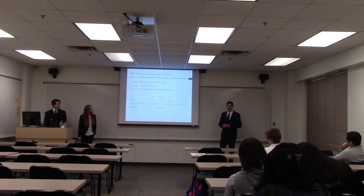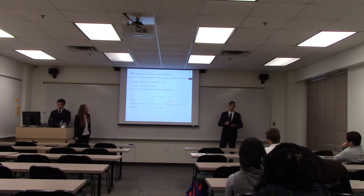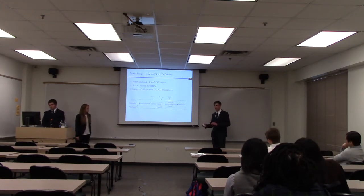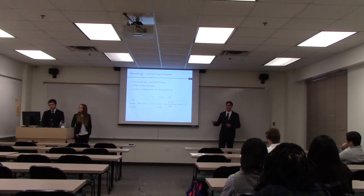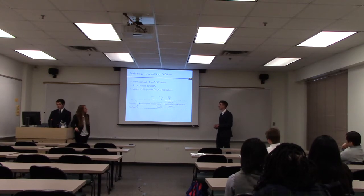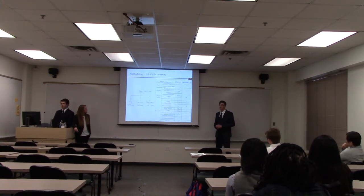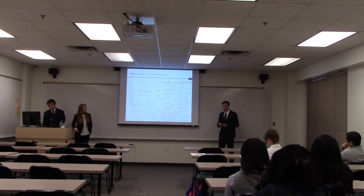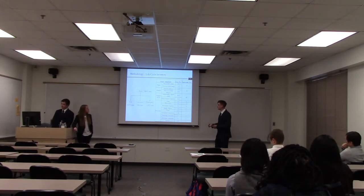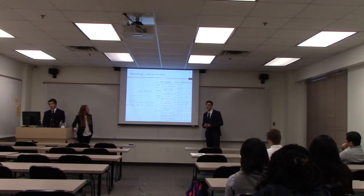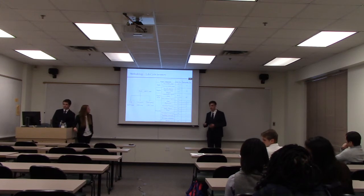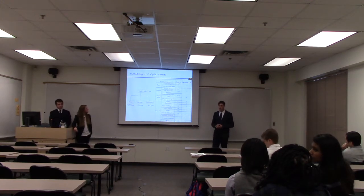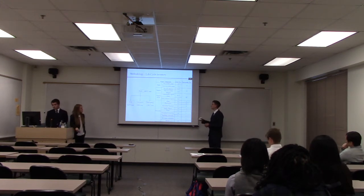Our goal in analyzing these variables is to determine whether single stream or multi-stream is more favorable. The scope starts at the beginning of waste collection and continues until the end of life of the waste. Harrisonburg is divided into two systems: JMU, which adopts a multi-stream recycling system characterized by three main components — paper, plastic, and organic waste — and the city itself, which uses a single stream recycling system, characterized by recyclable and non-recyclable components.